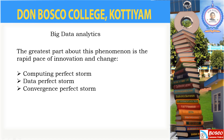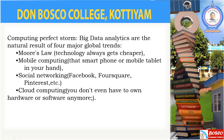The changes in actual hardware and software technology can be explained in terms of three storms: the computing perfect storm, the data perfect storm, and the convergence perfect storm.